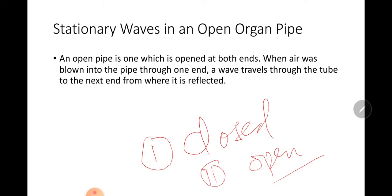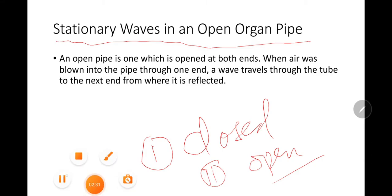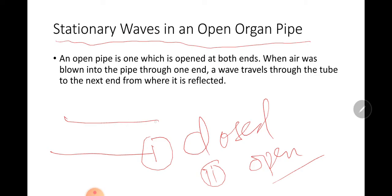First we will study stationary waves in an open organ pipe. An open organ pipe is one which is open at both ends. When air is blown into the pipe through one end, a wave travels through the tube to the other end from where it is reflected. An organ pipe which is open at both ends is known as an open organ pipe.